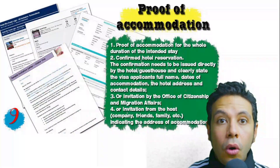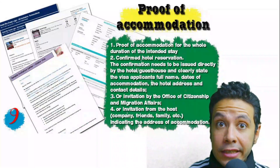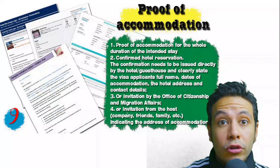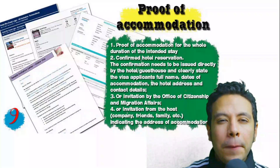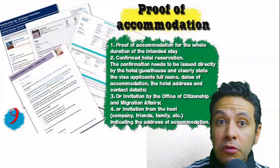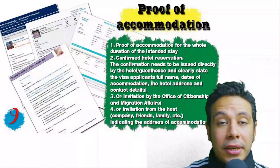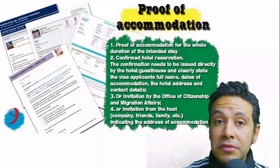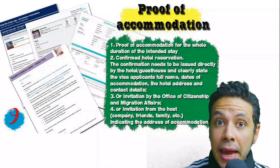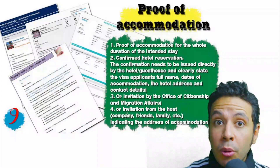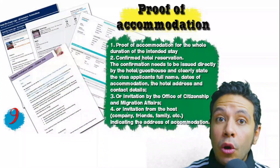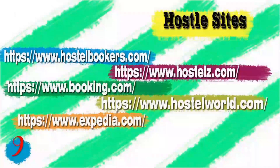You will also need to provide proof of accommodation. This could be a confirmed hotel reservation, an invitation from a host, or an invitation from an organization you are visiting. For hotels or hostels, an initial booking is usually acceptable, but in some cases a confirmed booking is needed. The hotel name, address, and contact number must be mentioned. If invited by a person, a letter of invitation should be submitted with a copy of the inviting person's passport.